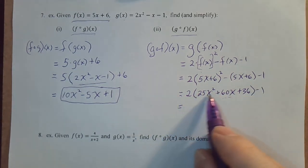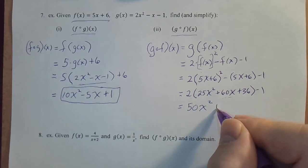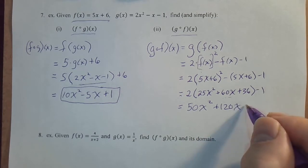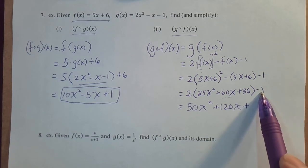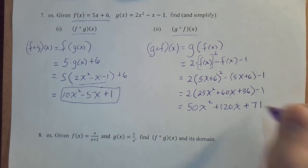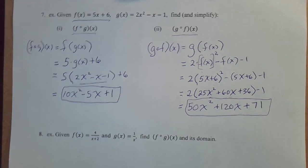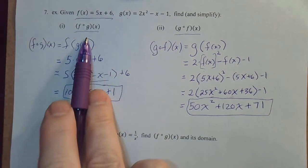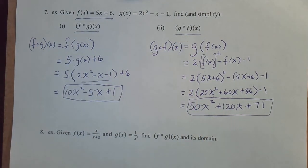Let's just distribute the 2 through and subtract 1 and we're done. 50x squared plus 120x plus 2 times 36 is 72, but there's a minus 1 here, so I'll put plus 71. So one of the important points of this problem was to show that f of g of x is not the same as g of f of x for most functions. There are some rare cases which we are going to study where they will be equal to each other, but not in this case.